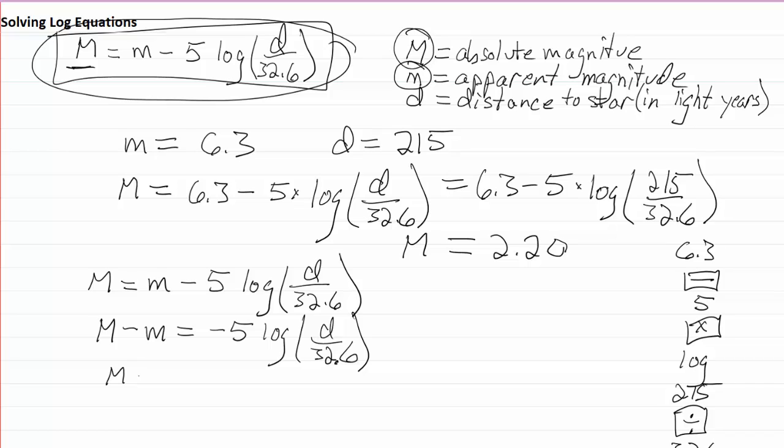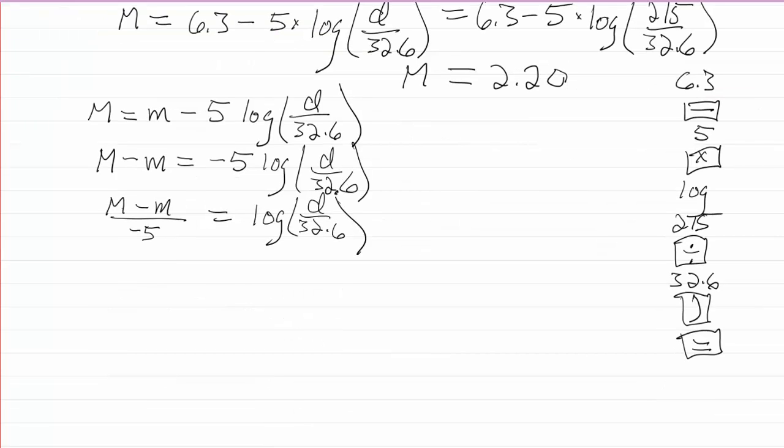So that will give me M minus little m over negative 5 is going to equal the log of d over 32.6. Dividing by a negative will actually reverse the order up there, or if you can imagine multiplying top and bottom by negative 1 if you want. But this left hand side can change into little m minus capital M over 5 is equal to the log of d over 32.6.